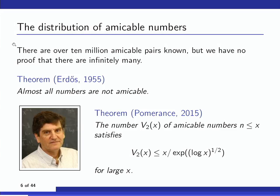Though there are methods for constructing amicable numbers going back a ways — Euler constructed dozens of pairs, and now using a computer there are more than 10 million amicable pairs, but we still don't have a proof there are infinitely many. In the other direction, let v₂(x) count amicable numbers up to x. The first significant theorem was due to Erdős in 1955: he proved that v₂(x) is little-o of x — almost all numbers are not amicable. The state-of-the-art result is that the number of amicable numbers up to x is smaller than about x over e to the root log x.